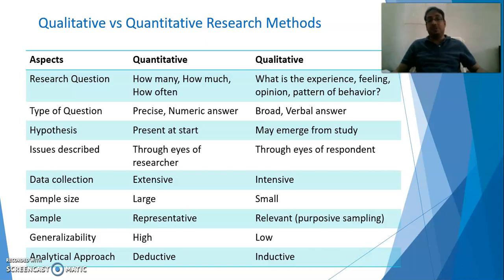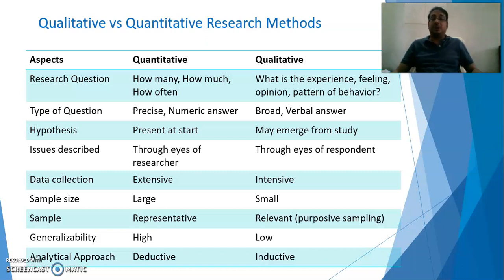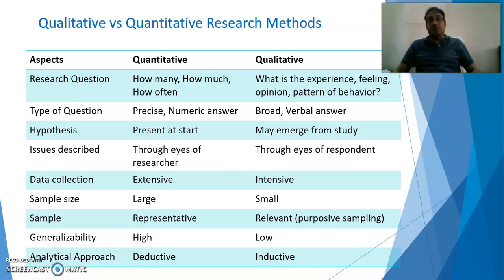For quantitative, the sample size should be representative of the population. But for qualitative, this requirement does not apply — the qualitative sample size should be relevant to the purposes of the study, not representative of the population. In terms of generalizability, quantitative research has very high generalizability, but for qualitative we cannot generalize because the sample does not represent the population.